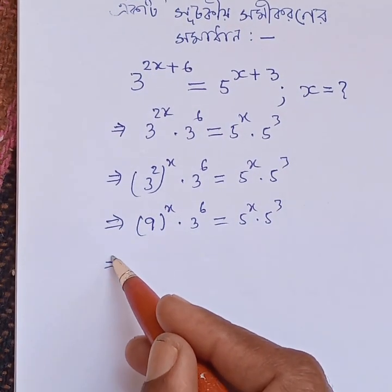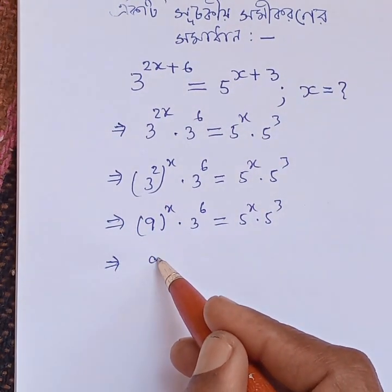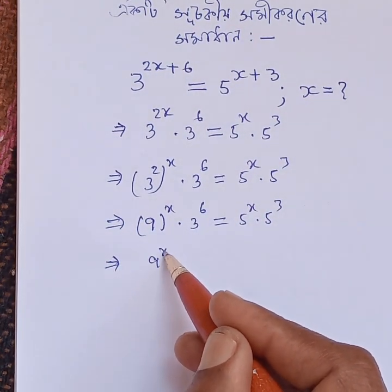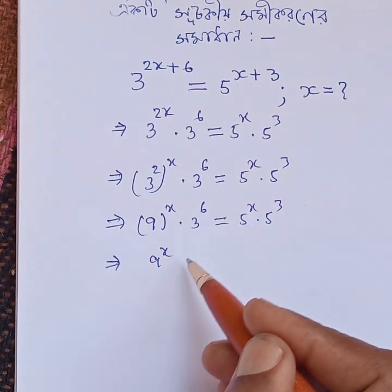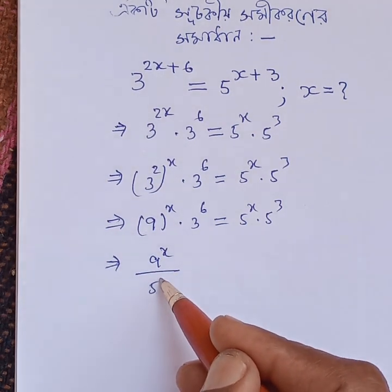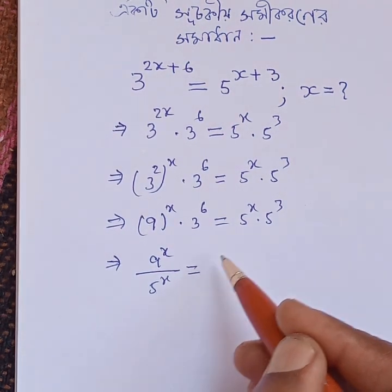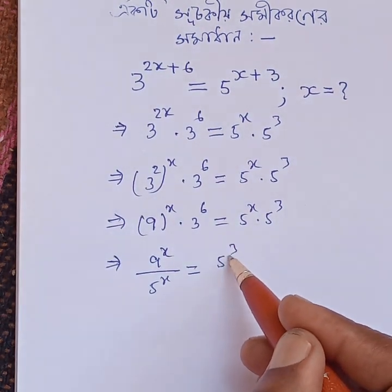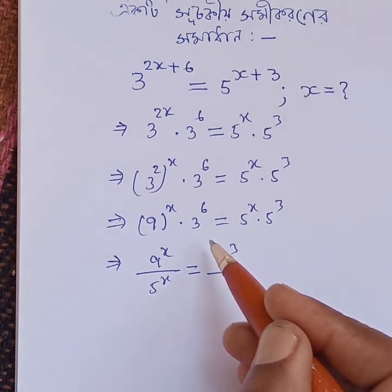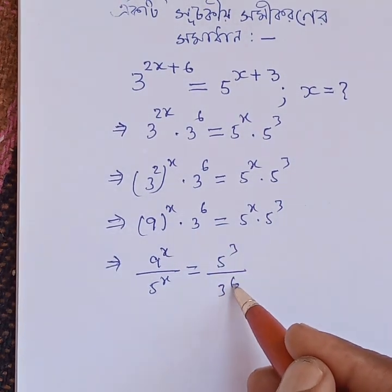This implies 9 to the power of x divided by 5 to the power of x is equal to 5 cubed divided by 3 to the power of 6.